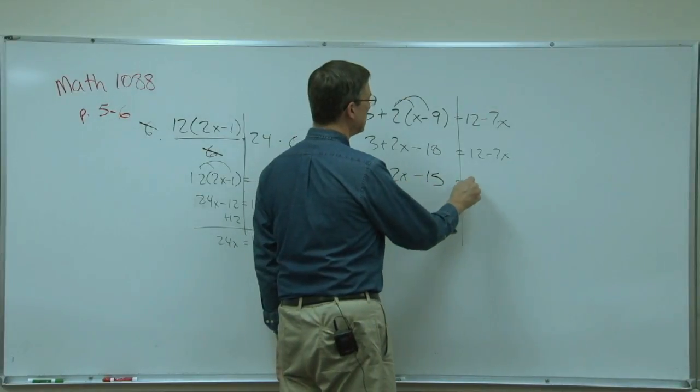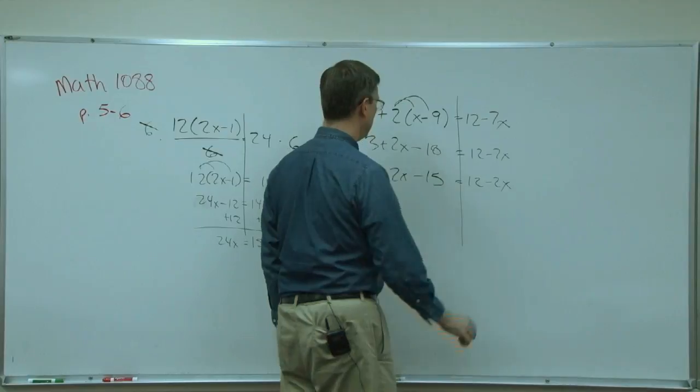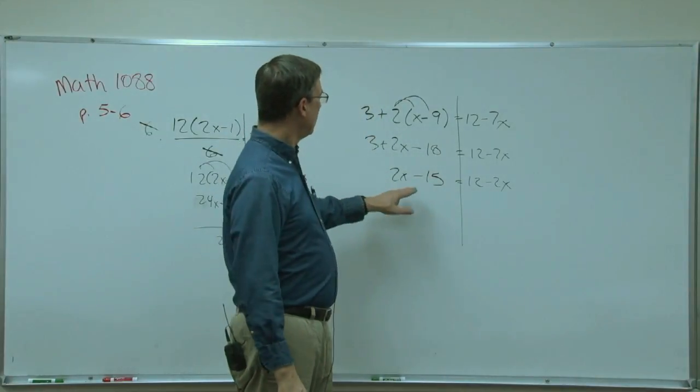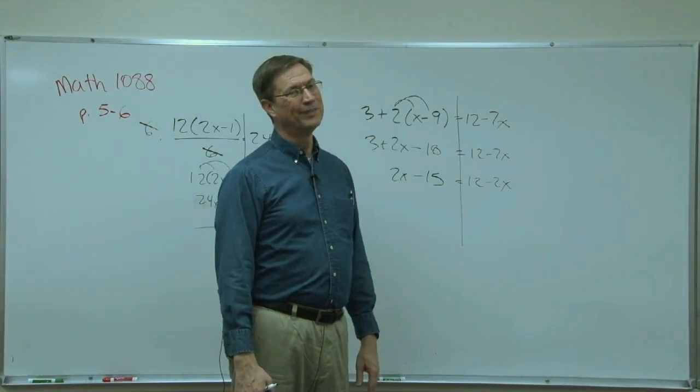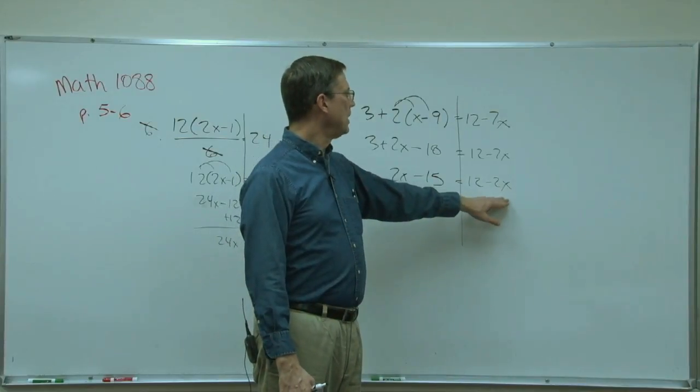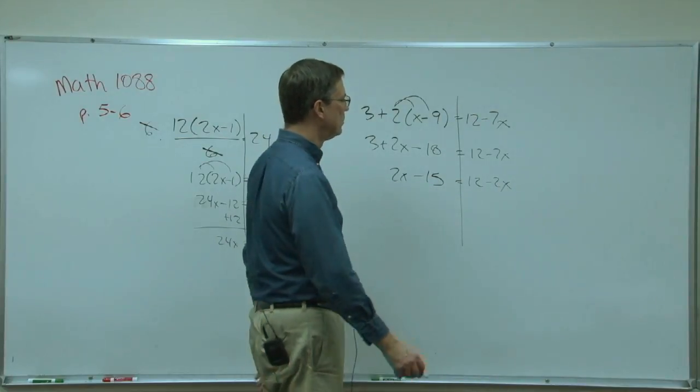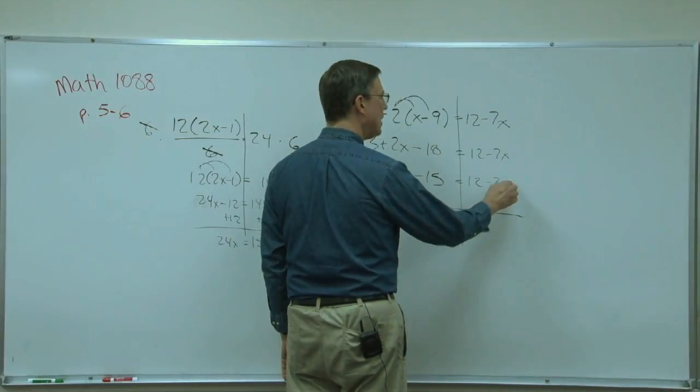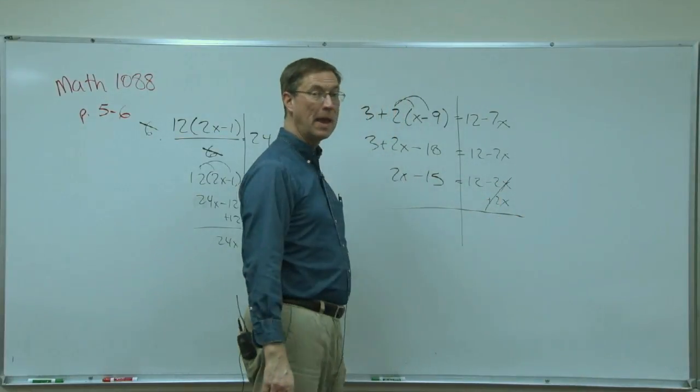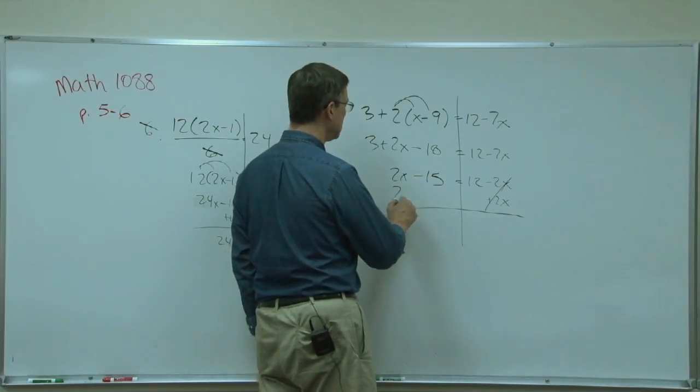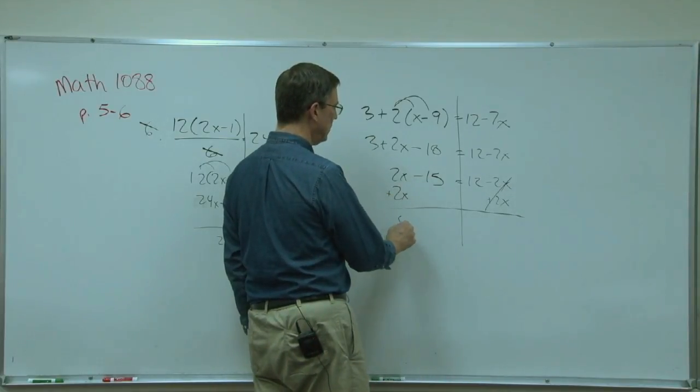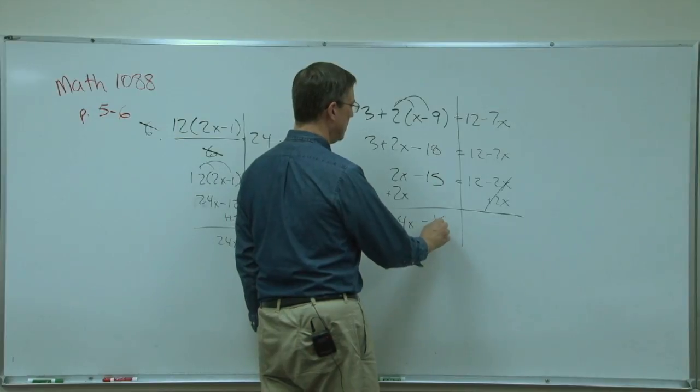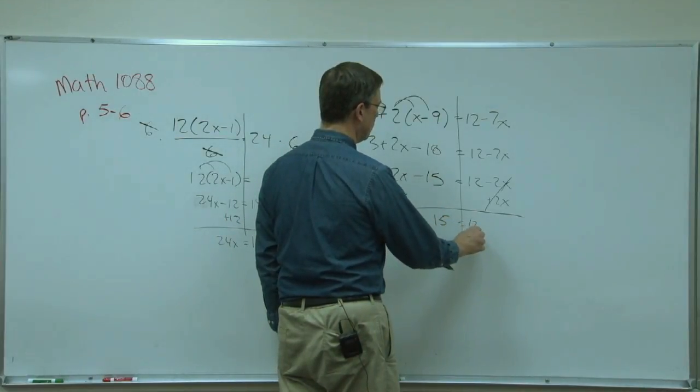So we'll subtract the 3 from the 18 but keep the negative, and I'm going to have 2x. Now it looks like I've got a 2x on both sides, they're going to cancel out. No, no, no. Let's get rid of the x on the right, so I'm going to add 2x over here. When I do that, that will cancel. I'm adding 2x to the negative 2x, so we'll add 2x to the 2x here. Now I have 4x minus 15 equals 12.